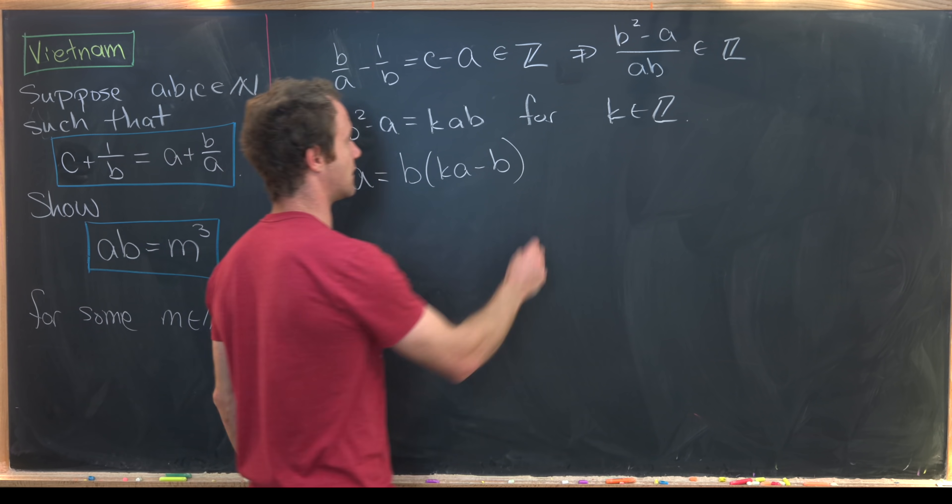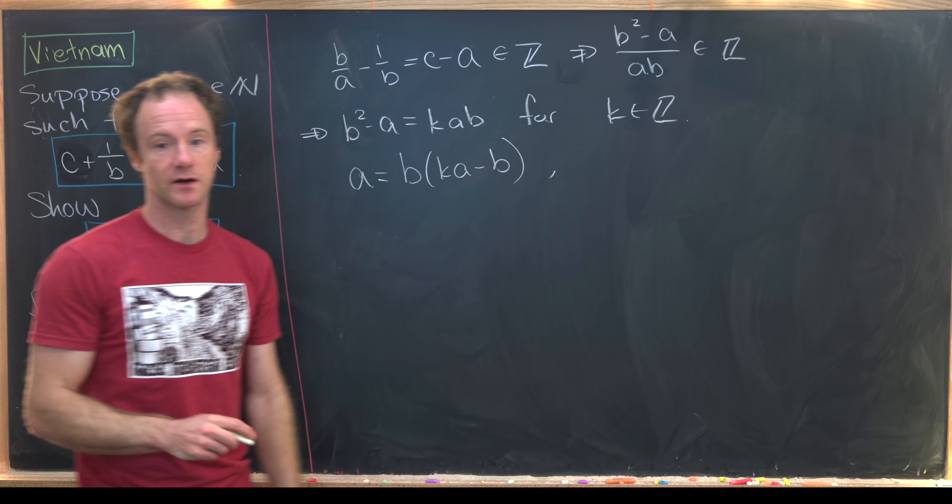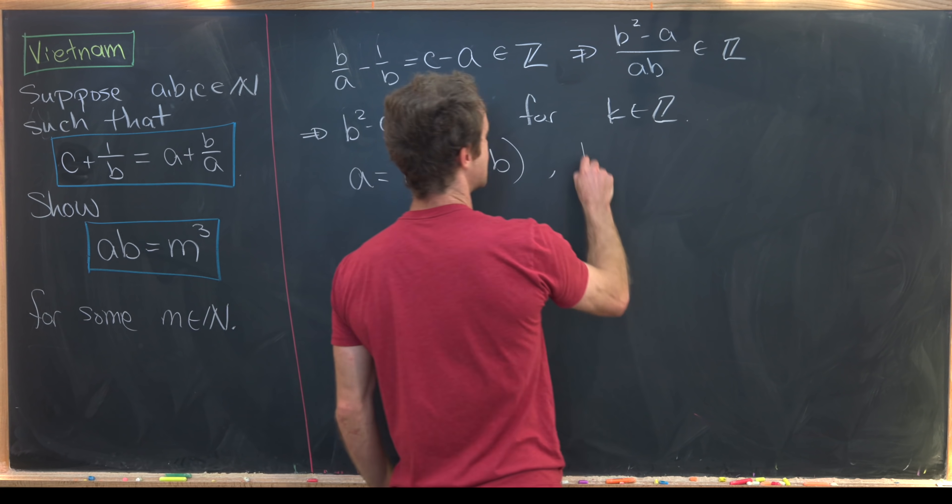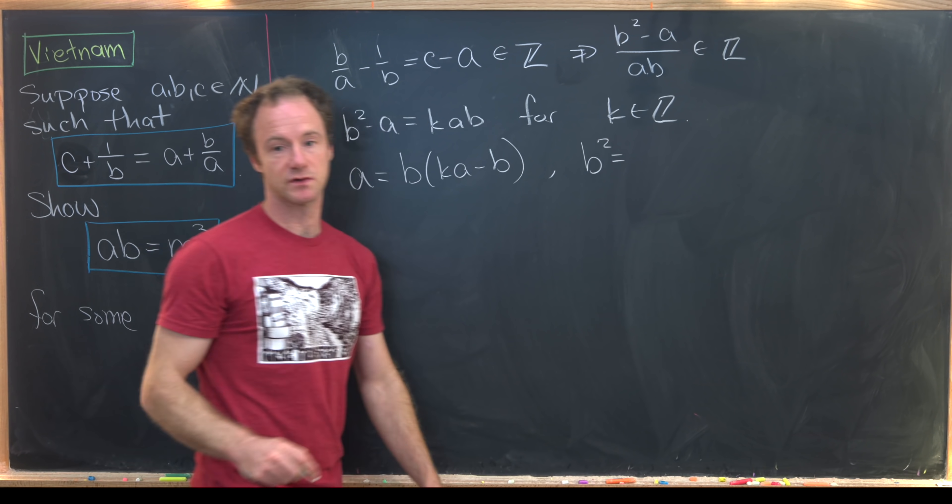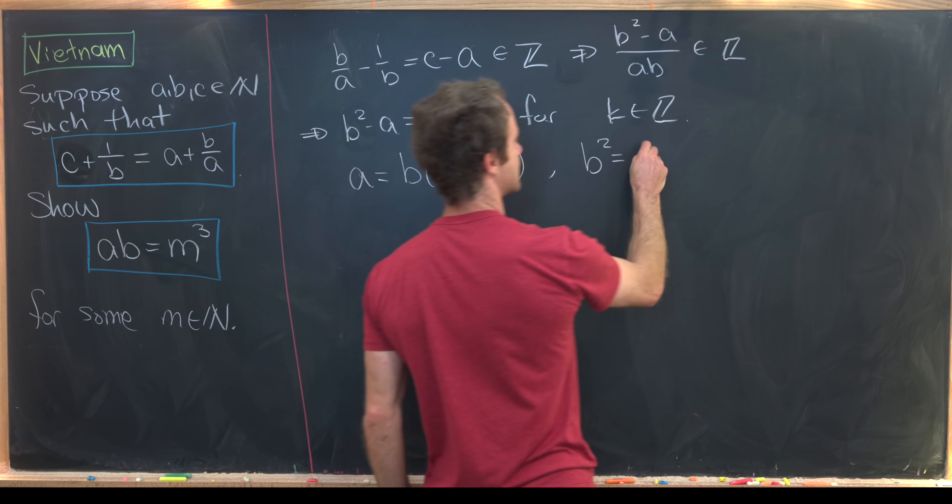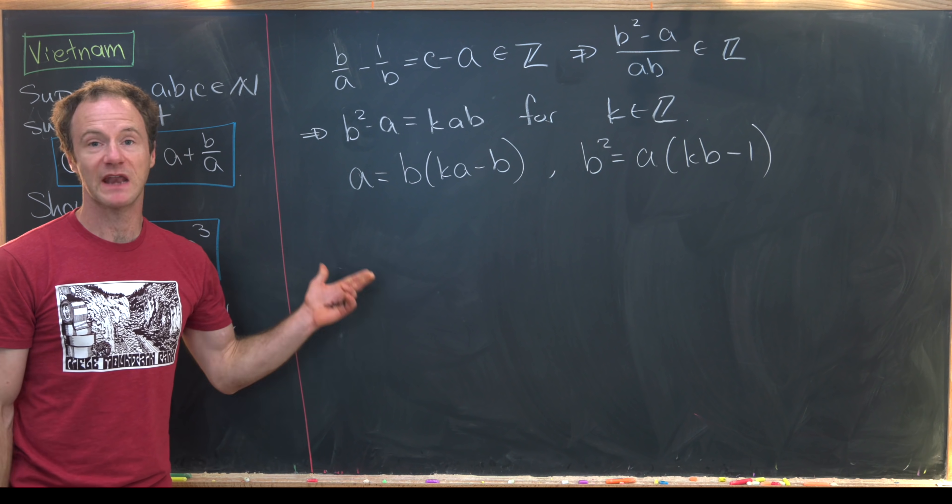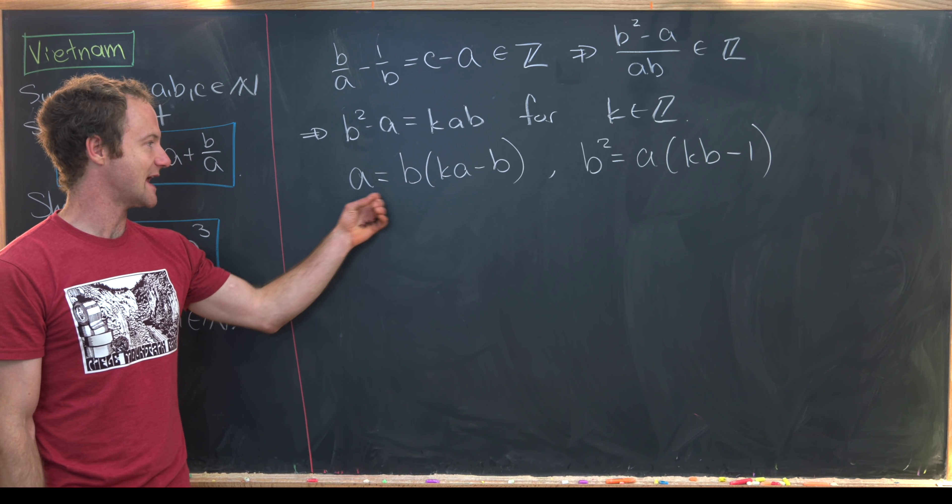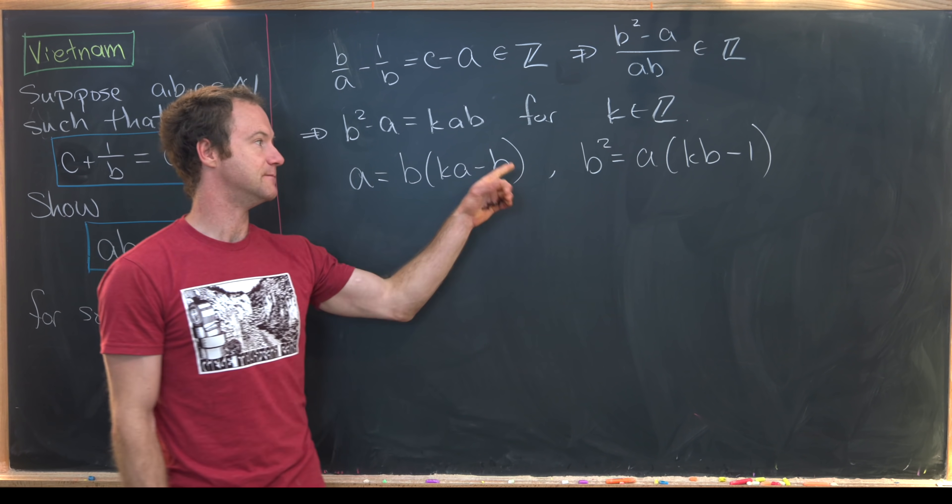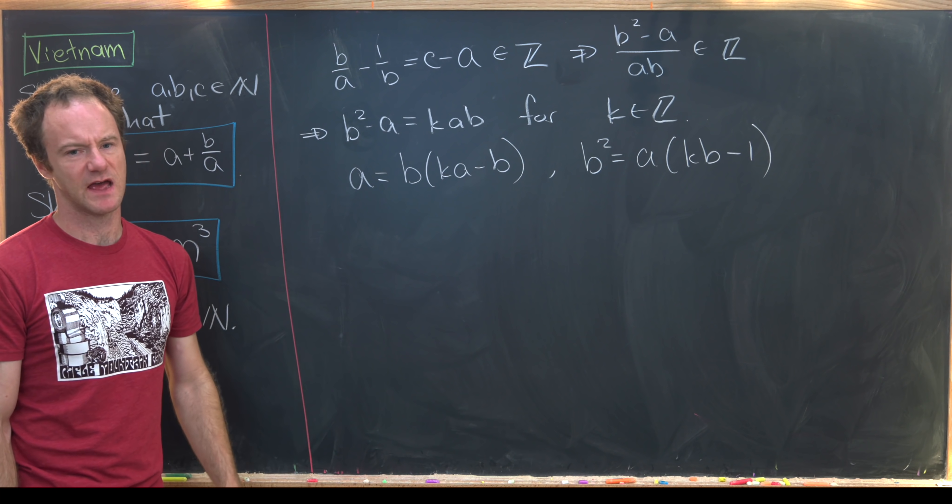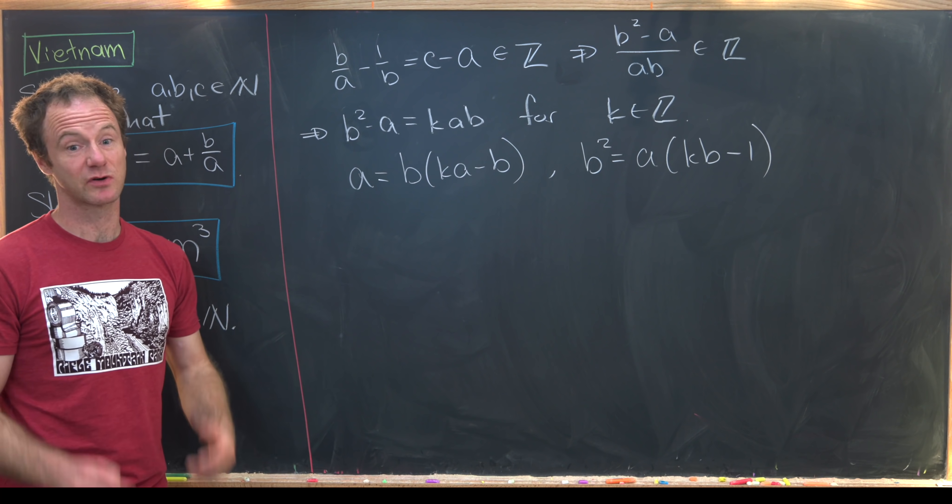We can also solve this for B squared, and we'll see that B squared is equal to A times KB minus 1. But now we look at this and we say that means A is a multiple of B, and B squared is a multiple of A. So that kind of setup is pretty special.